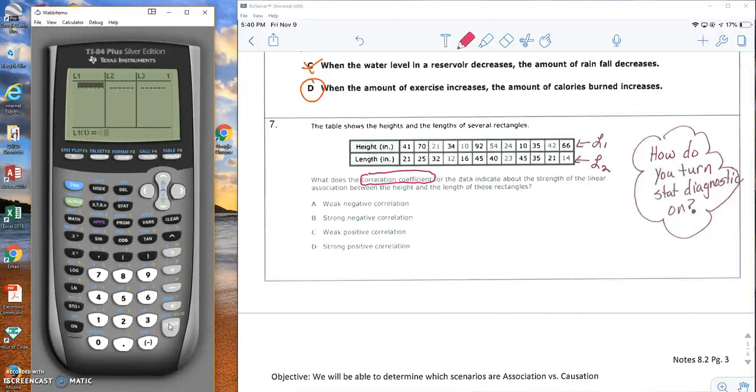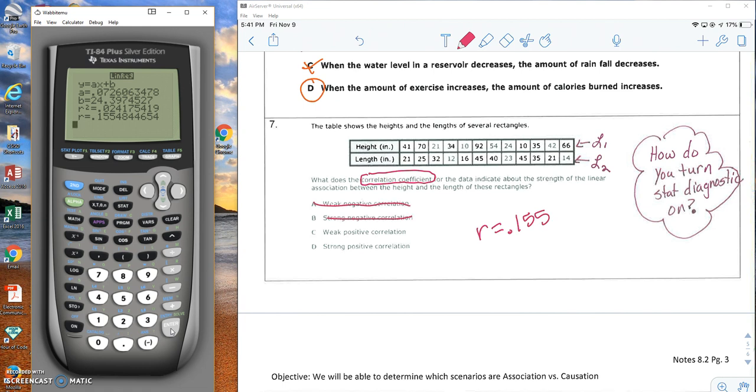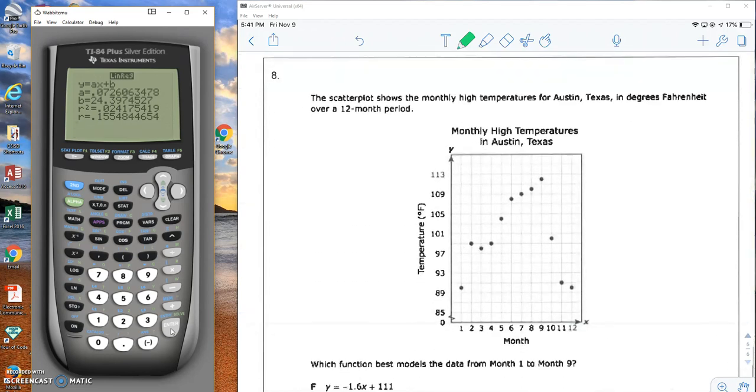So I'm going to plug this into stat edit. We got heights and links. If you need to pause the video so you can type all that in, that's fine. But I'm going to go stat calc 4. And my R value here is 0.155. It is a positive number. So it's not a negative correlation. But this is very weak. It is not close to 1. And remember, the closer to 1, the stronger the correlation. Because this is not close to 1, it's closer to 0 than to 1, it is not strong at all.